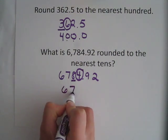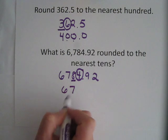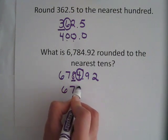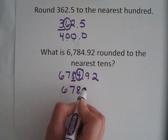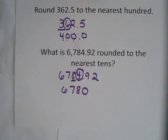So the 6, 7 stay. They don't change. The 8 stays because the 4 told it to stay. And then the 4, that place becomes a 0.